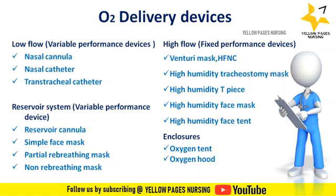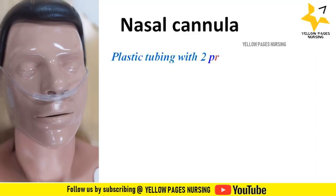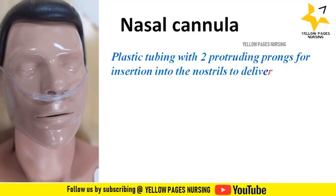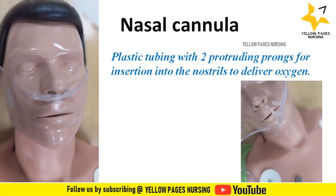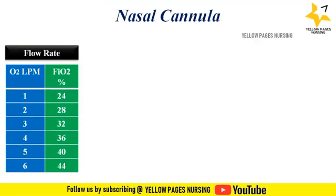Let's discuss the low flow variable performance devices one by one. First comes nasal cannula — a plastic tubing with two protruding prongs for insertion into the nostrils to deliver oxygen. After wearing the prongs inside the nostrils, the nasal cannula is taken behind the ear and then tightened. Using a nasal cannula, an oxygen flow rate of about 1 to 6 liters per minute can be given, with which FiO2 of about 24 to 44% can be achieved.